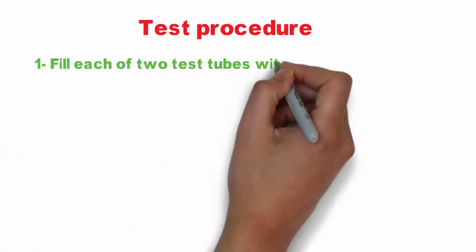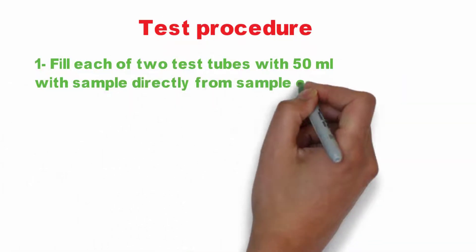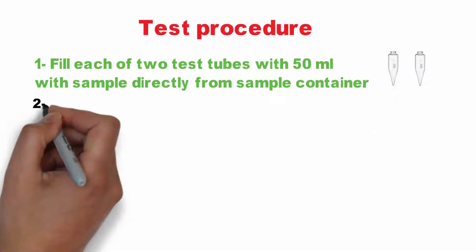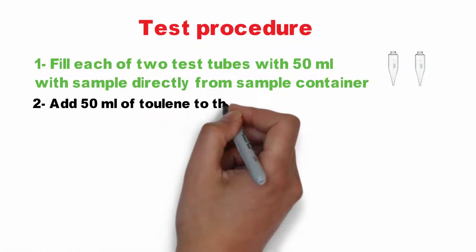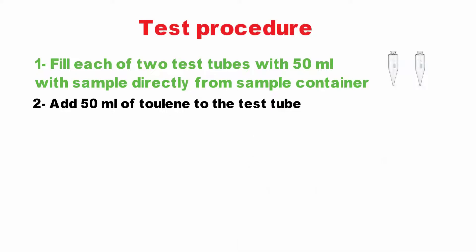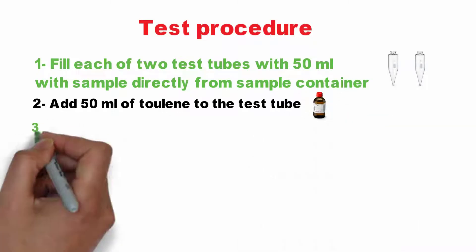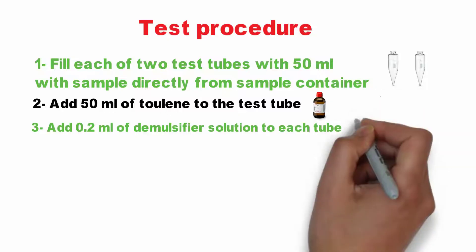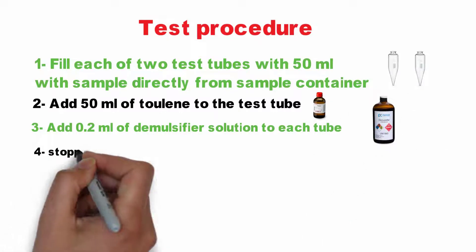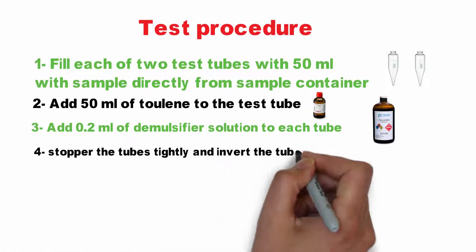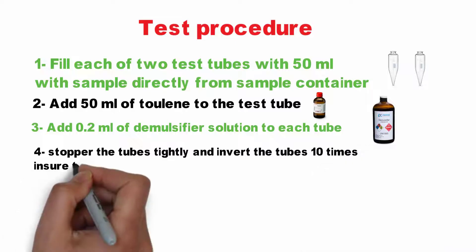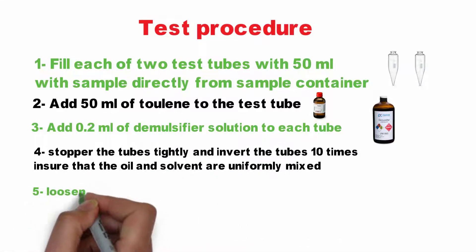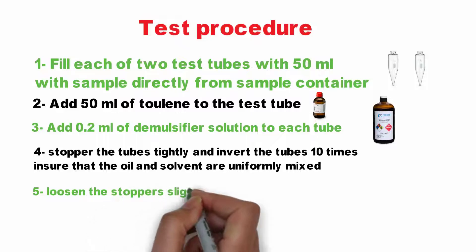Fill each of two test tubes with 50 ml of sample directly from the sample container. Add 50 ml of toluene to the test tubes. Add 0.2 ml of demulsifier solution to each tube. Stopper the tubes tightly and invert the tubes 10 times to ensure that the oil and solvent are uniformly mixed.